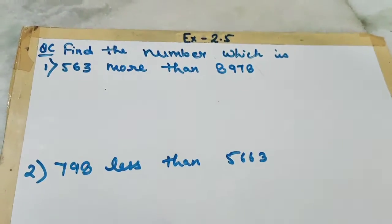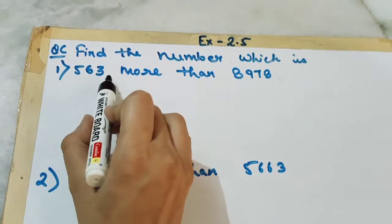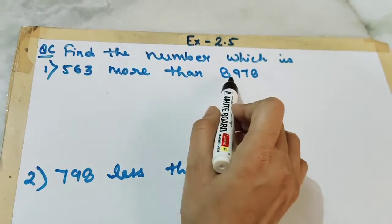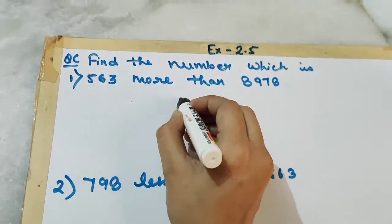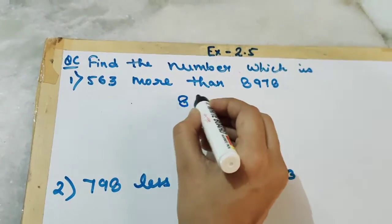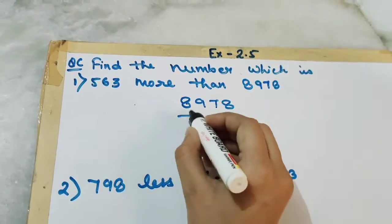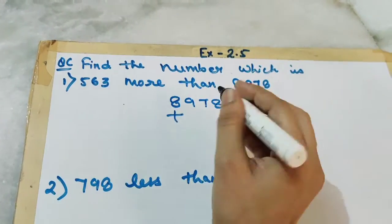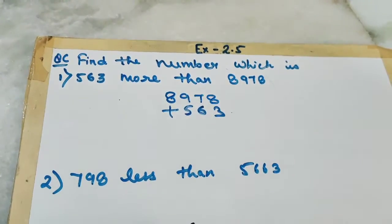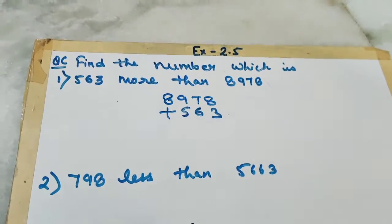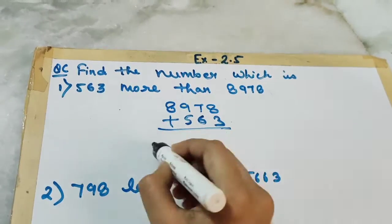We have to find out the number which is 563 more than this number. First, what we have to do? We will write 8,978 and then — more than means we have to add, and less than means we have to subtract. Now let's add this number.